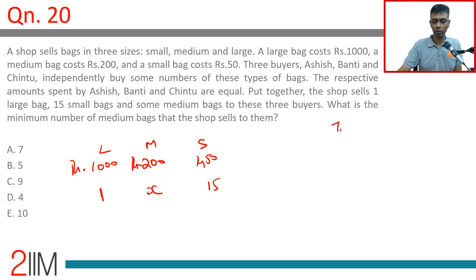So to start with, the total amount should be a multiple of three. Otherwise, the amount spent by each of them will not be equal.